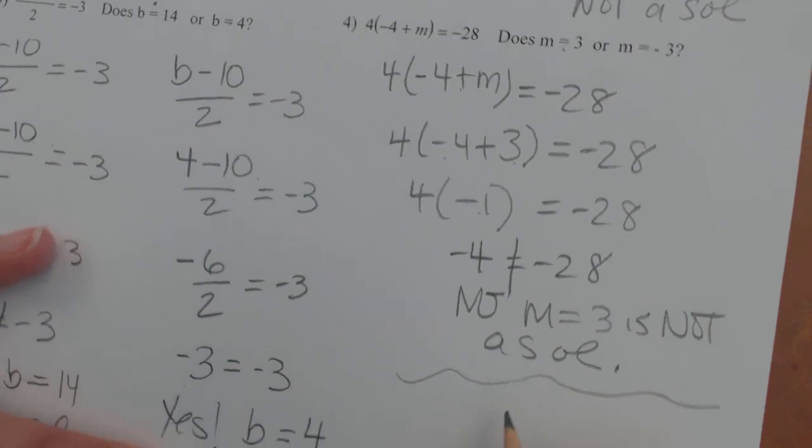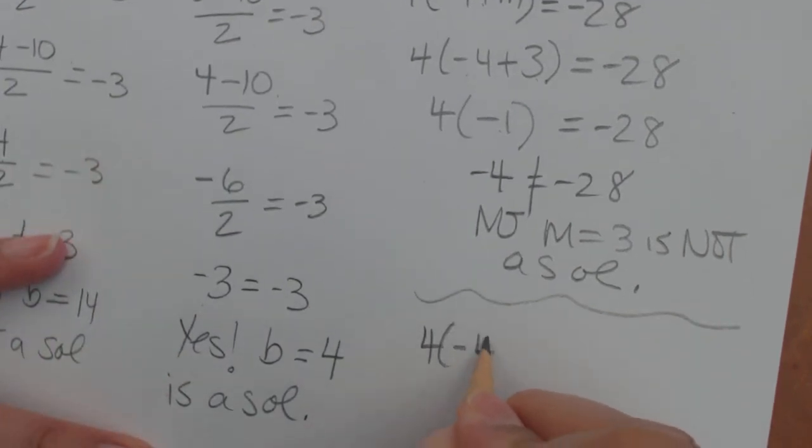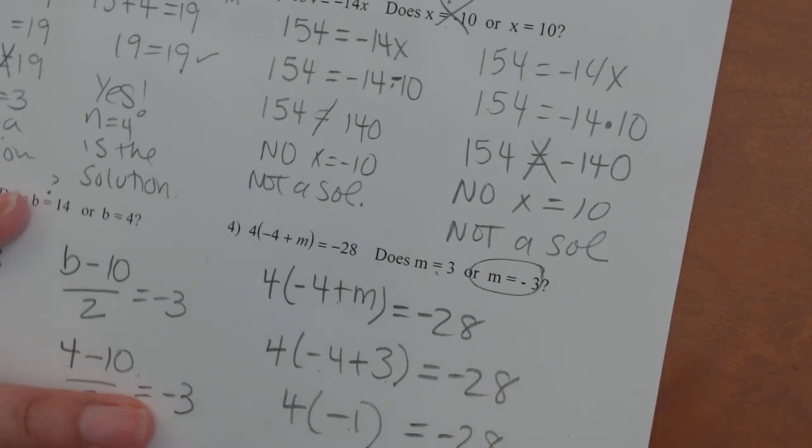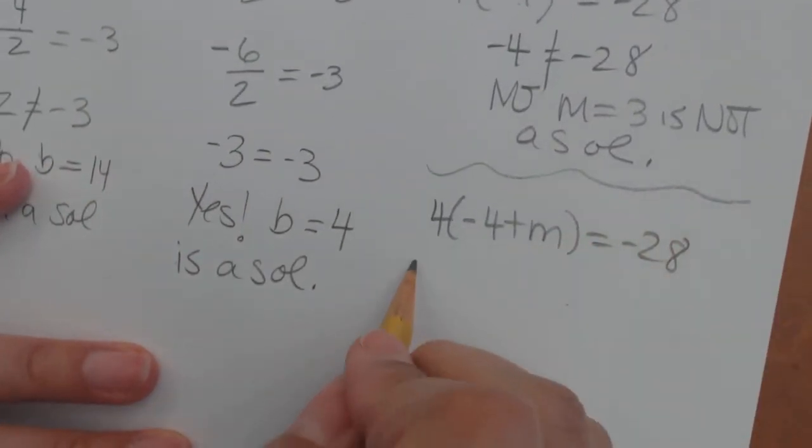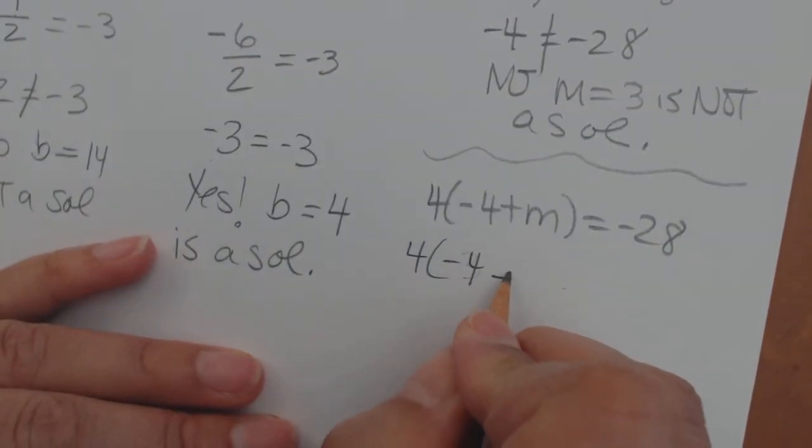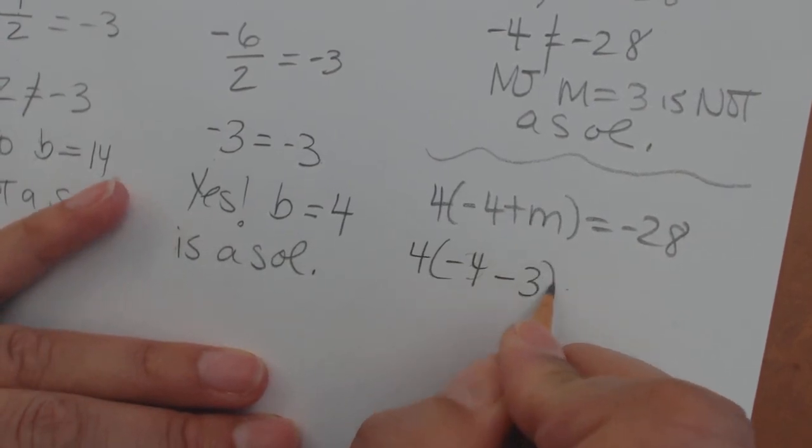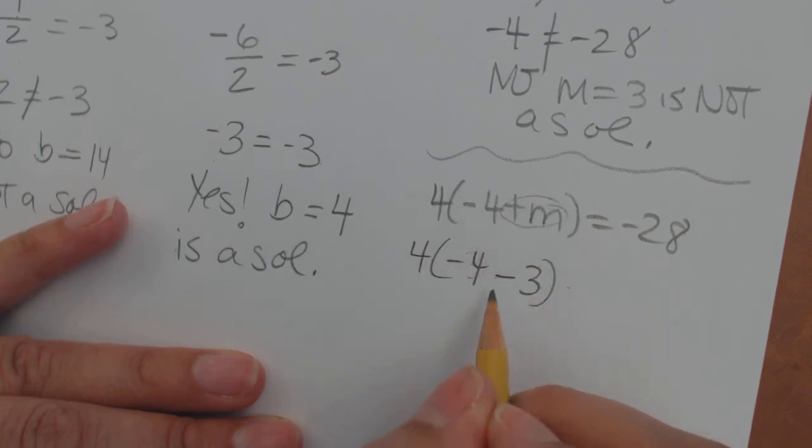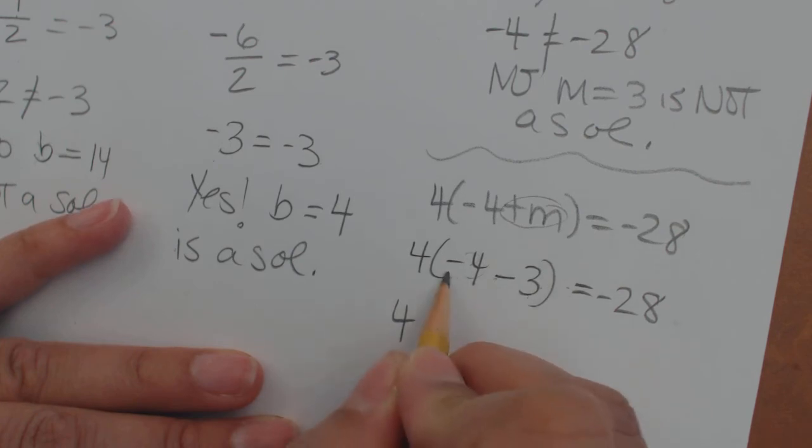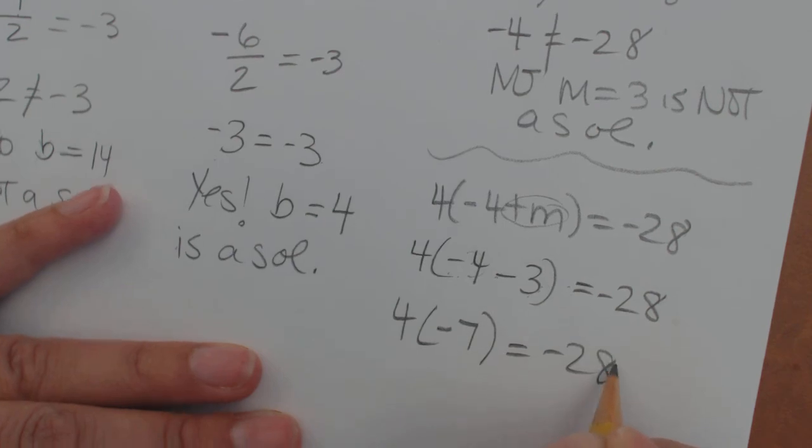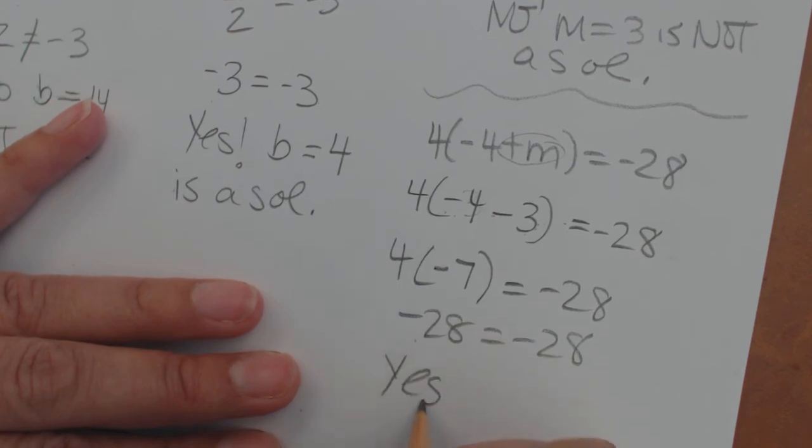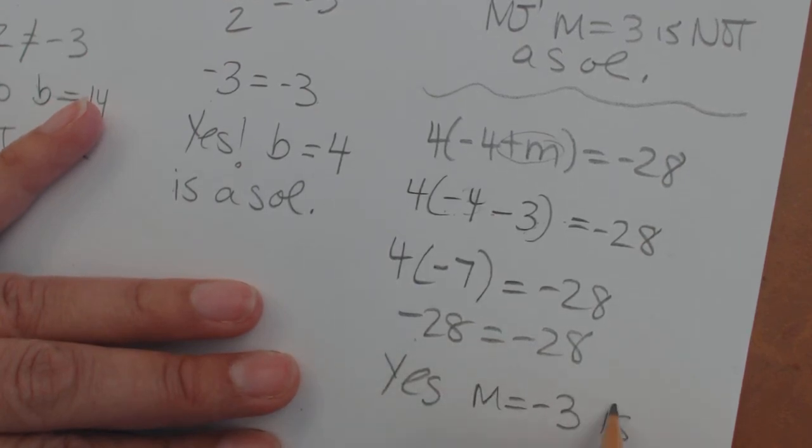Let's go back. 4 times negative 4 plus m equals negative 28. Just rewriting it down. Now we have to go up here and we have to try m equals negative 3. So let's try that. 4 times negative 4. Now we're going to put a negative 3 in. So I'm just going to do minus 3. I'm going to take out this whole plus m and I'm going to put minus 3 equals negative 28. So 4, let's do what's inside the parentheses. Negative 4 minus 3 is negative 7 equals negative 28. And you can see it. I can see it. This is balanced. Negative 28 equals negative 28. So yes, m equals negative 3 is a solution.